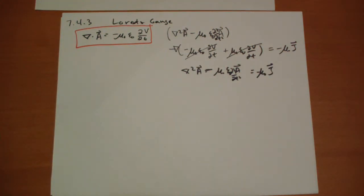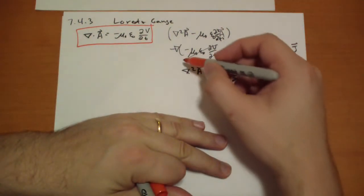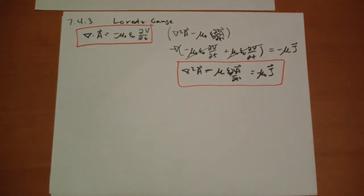So that's how we calculate A given J. So V just drops out of the picture. That makes things much easier than they used to be.